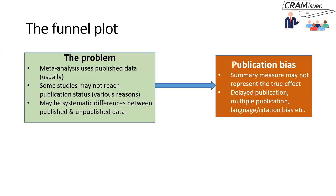These studies are often difficult to get published, and therefore there could be significant systematic differences between published and unpublished studies on the same topic. This causes the phenomenon referred to as publication bias — the summated measure may not truly represent the true effect, because studies with negative results don't get published. What's published is therefore probably an exaggerated estimate of the true effect.